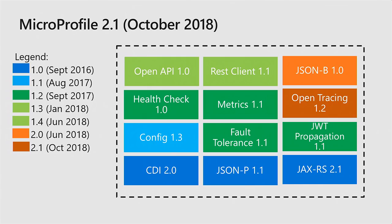I did want to go over a little bit about MicroProfile. Basically, there are three things that it started with: context and dependency injection, that's CDI 2. It started back in September 2016 with context and dependency injection, which is just basically a way of managing microservices, and then JSON for reading JSON, and then processing REST with JAXRS. Since then, they've basically evolved and added some new packages. The most recent one is October 2018 - they added a newer version of OpenTracing.